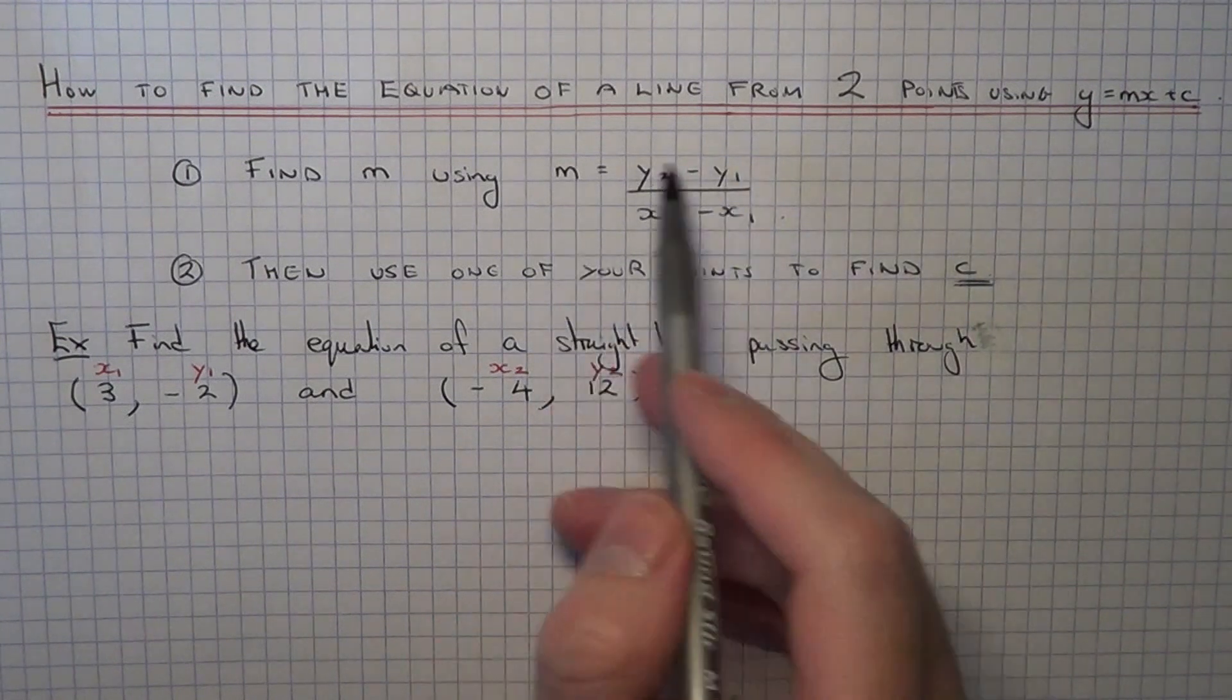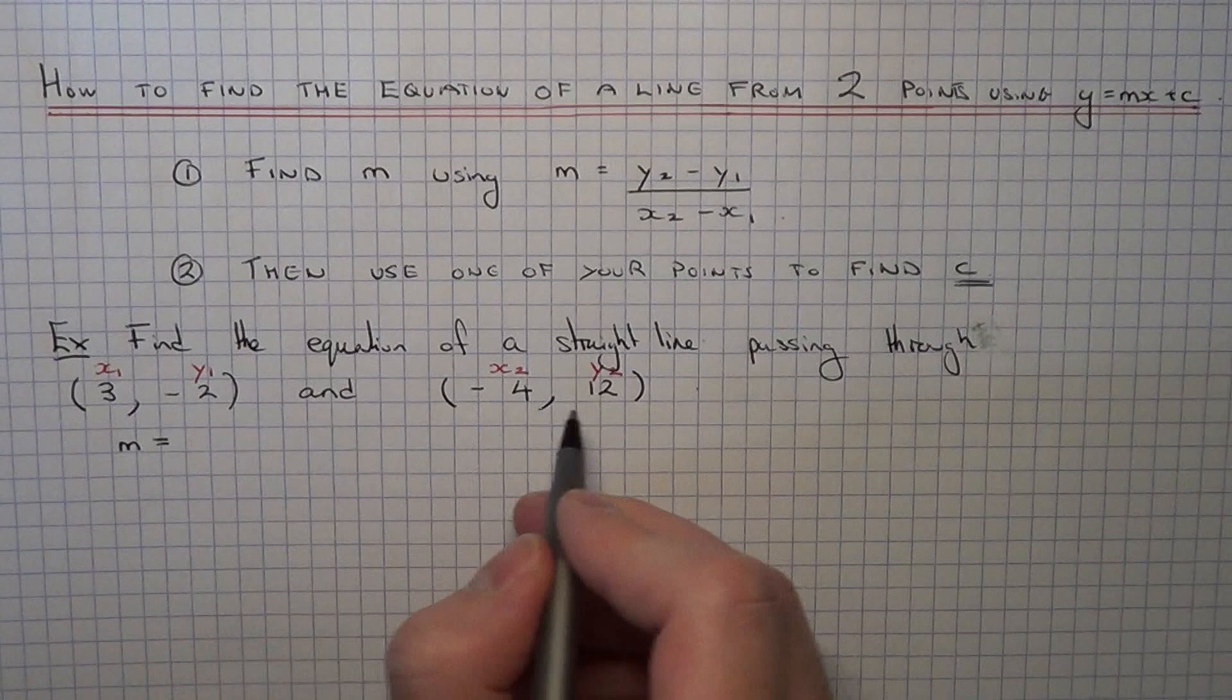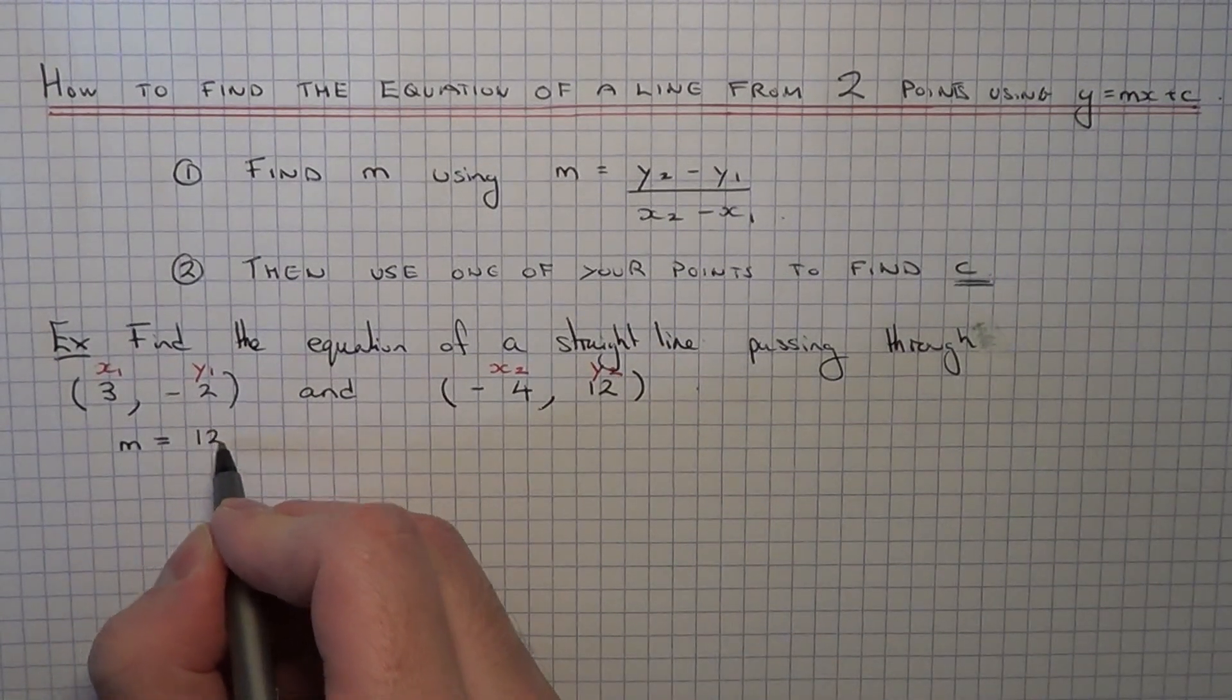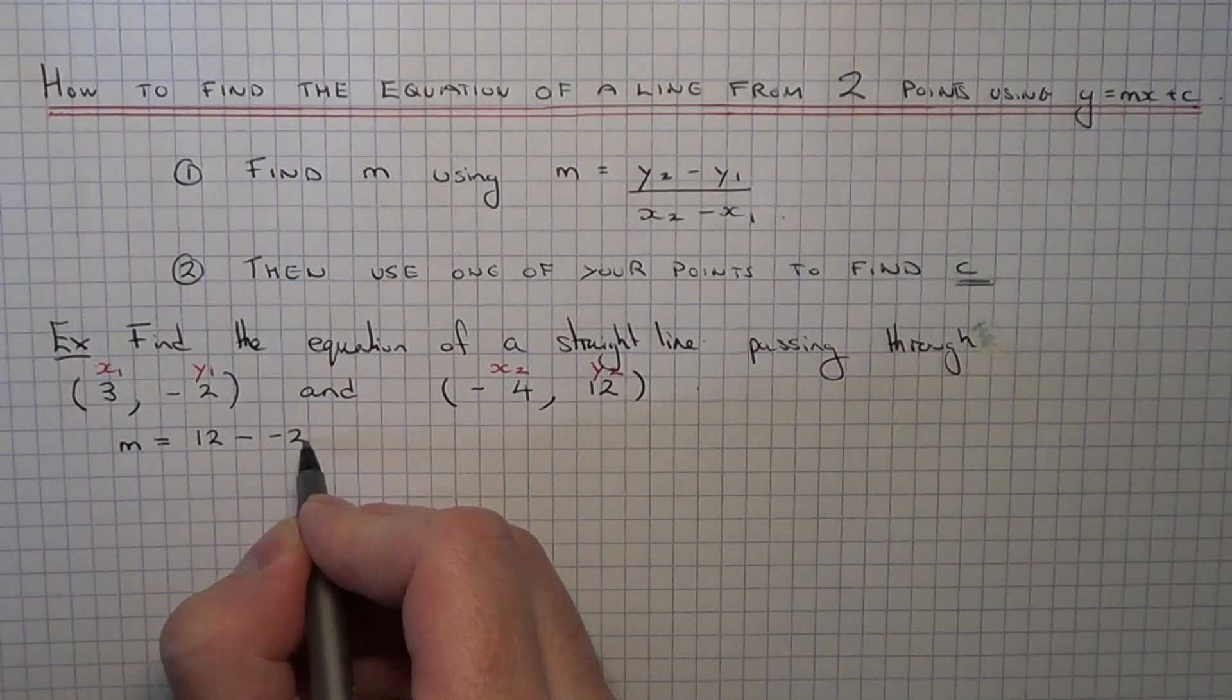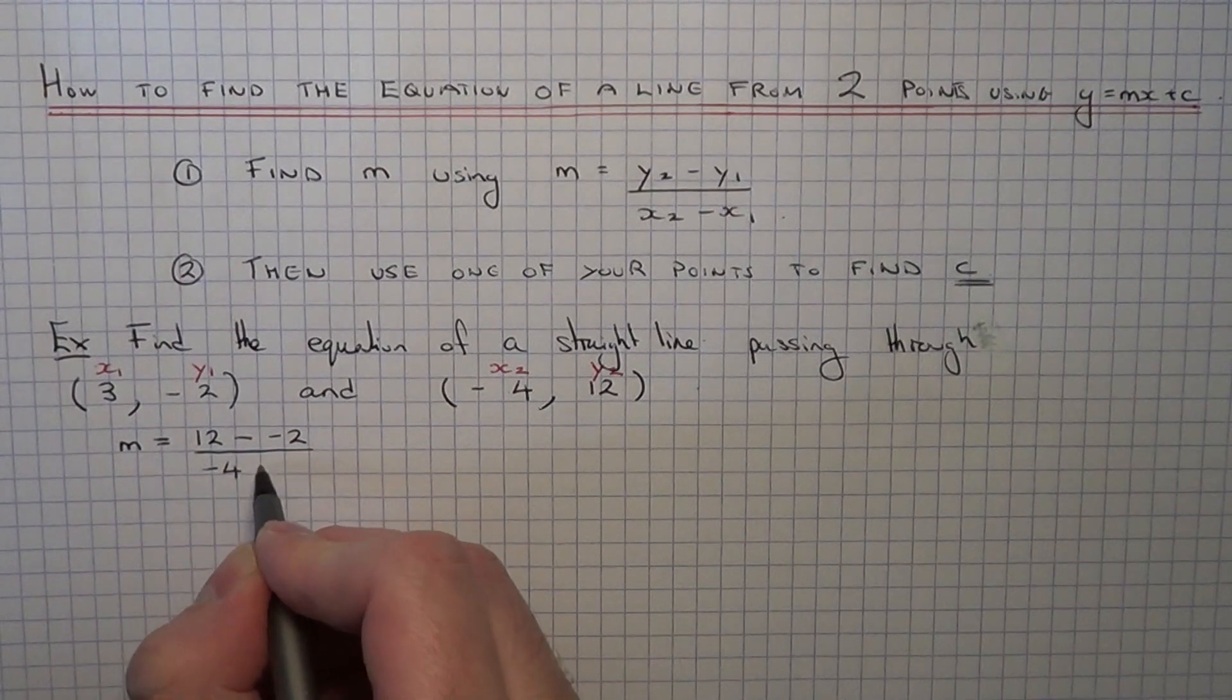So use the formula here to figure out the gradient. So the gradient of this line will be y2 minus y1, so it will be 12 take away minus 2 over minus 4 take away 3.